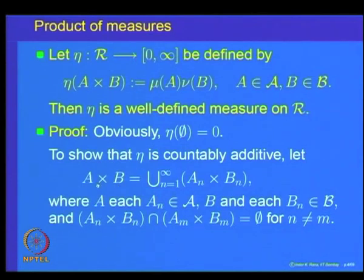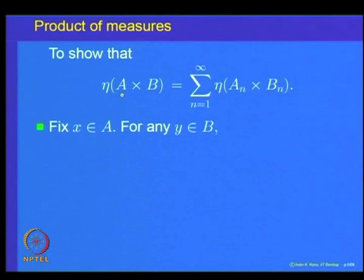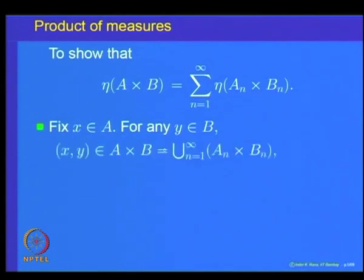We write A×B as a countable disjoint union of rectangles Aₙ×Bₙ, and what we want to show is that η of the rectangle A×B is equal to the summation over n of η(Aₙ×Bₙ). To prove this, fix any element x belonging to A. Then for any y belonging to B, we know that (x,y) belongs to A×B, which is the union of Aₙ×Bₙ.